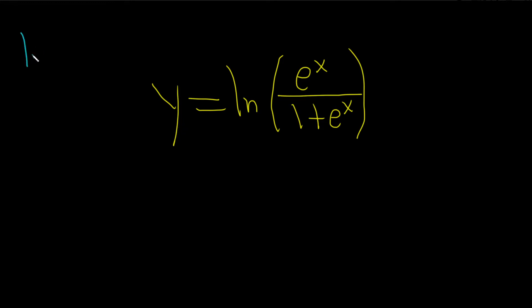So we know that the derivative of the natural log of x is just 1 over x. So here if we just took the derivative right away, it'd be 1 over all of this times the derivative of all of this, and that's going to involve a quotient rule. So there is an easier way to do this.